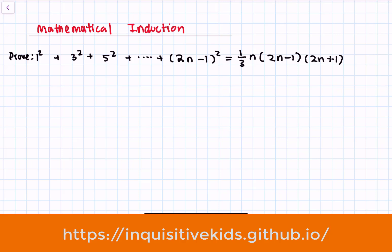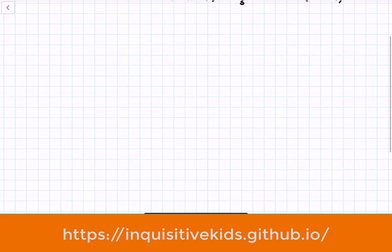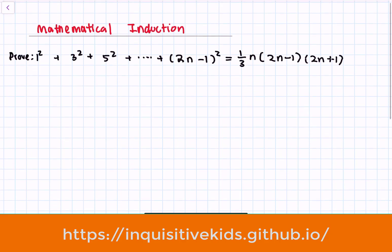1 squared plus 3 squared plus 5 squared, all the way added up to the nth term, 2n minus 1 squared, is equal to one-third n times 2n minus 1 times 2n plus 1.